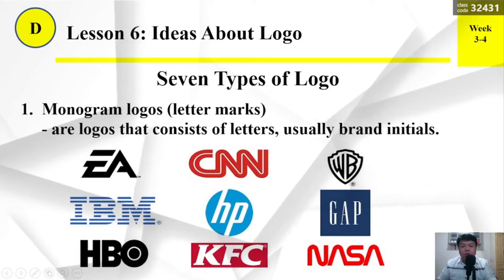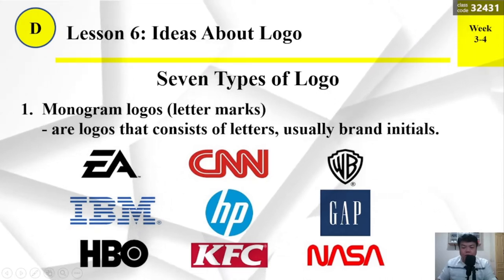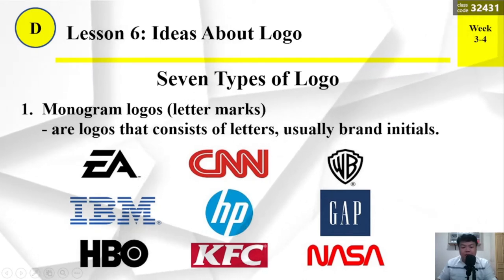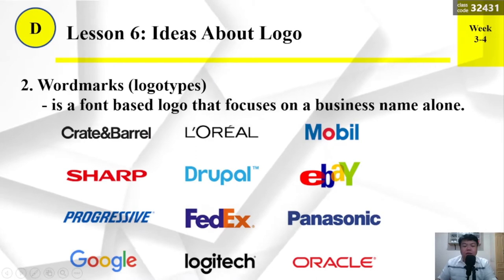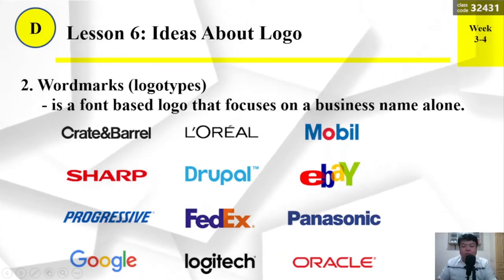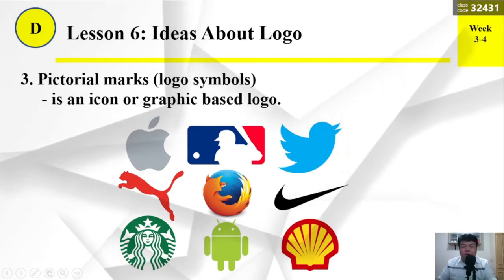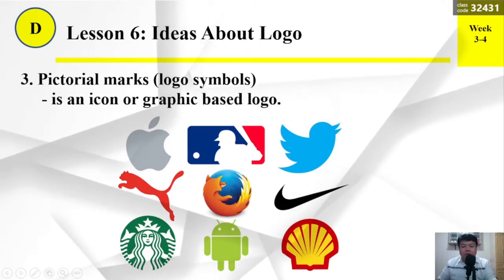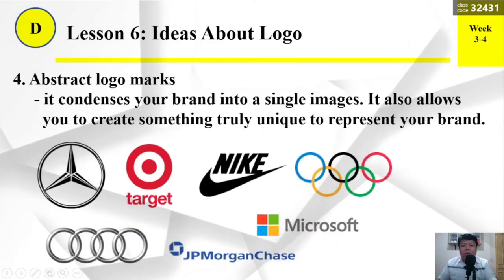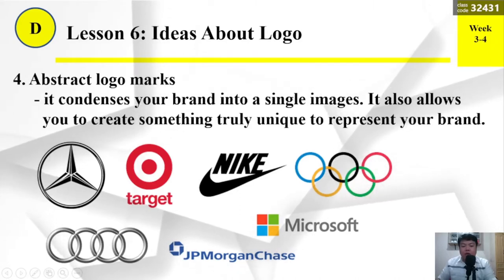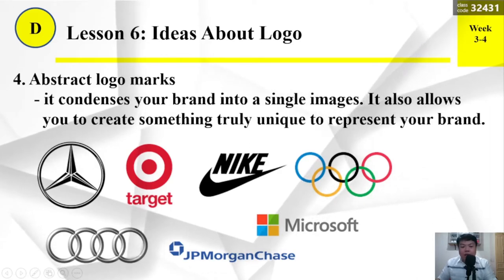Seven types of logos. Number 1: Monogram logos or letter marks — logos that consist of letters, usually brand initials. Number 2: Word marks or logotypes — a font-based logo that focuses on a business name alone. Number 3: Pictorial marks or logo symbols — an icon or graphic-based logo. Number 4: Abstract logo marks — condenses your brand into a single image and allows you to create something truly unique to represent your brand.